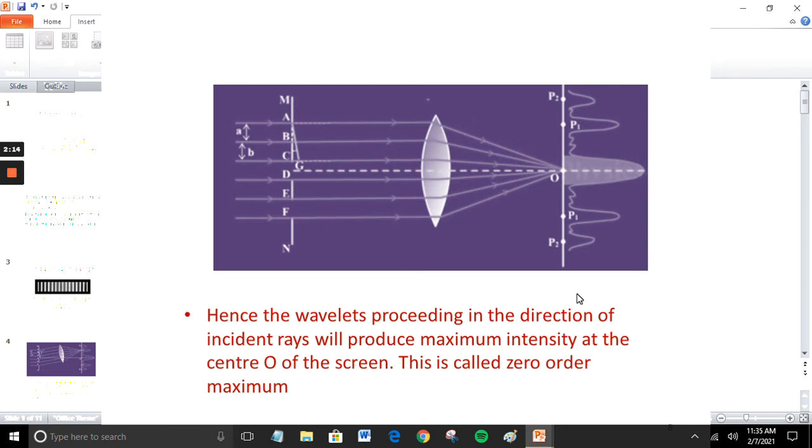Hence the wavelets proceeding in the direction of incident rays will produce maximum intensity at the center O of the screen. This is called zero order maximum.